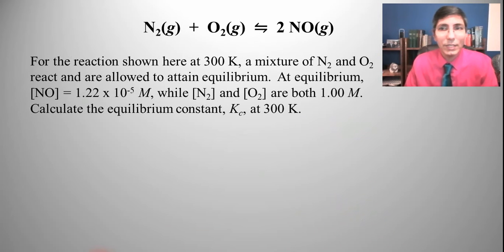Now let's try another example of calculating the equilibrium constant. So we have another reaction here, N2 plus O2 yields 2NO. The question says for the reaction shown here at 300 kelvins a mixture of N2 and O2 react and are allowed to attain equilibrium. At equilibrium the concentration of nitrogen monoxide is 1.22 times 10 to the negative fifth molar while N2 and O2 are both one molar. Calculate the equilibrium constant Kc at 300 kelvins.